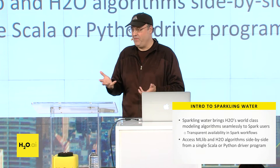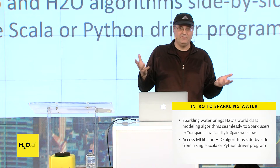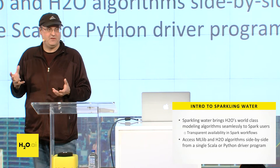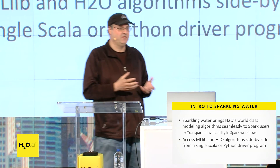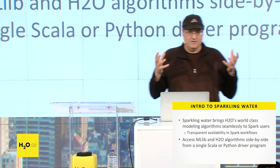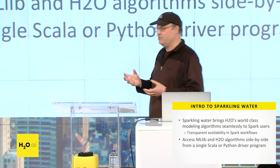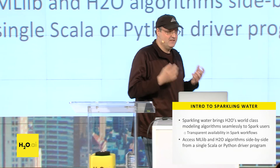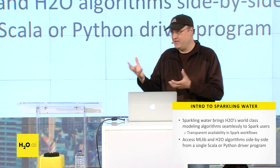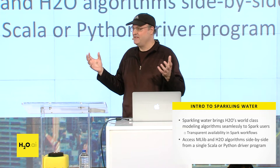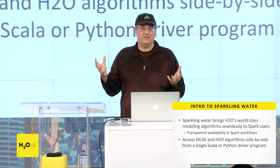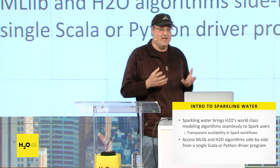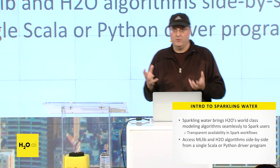Let me give you a little bit of background on what Sparkling Water is for those of you that haven't heard about it. The idea is to bring H2O's algorithms to the world of Spark users. The modeling algorithms available in H2O — since H2O is a Java project, it's open source, and Spark is a JVM-based project, open source — it really makes sense to take those two worlds and use the best of both side by side. And that's really what we're trying to do with Sparkling Water.